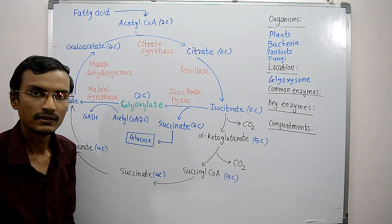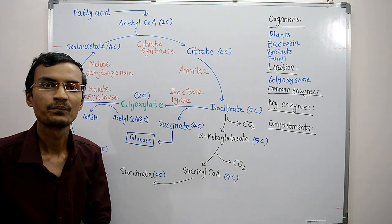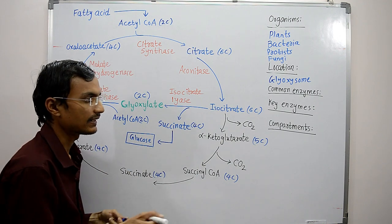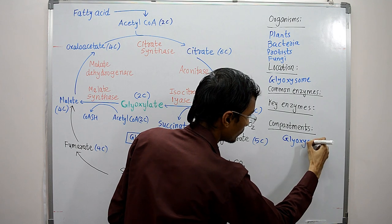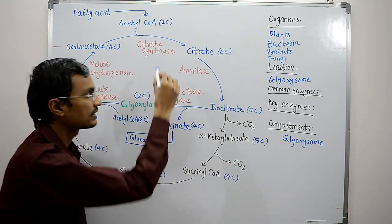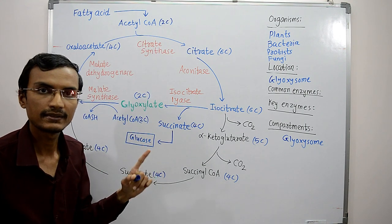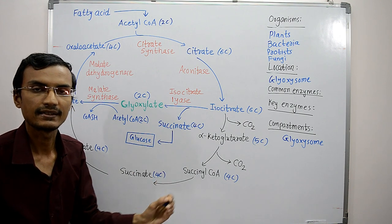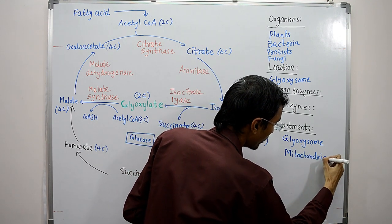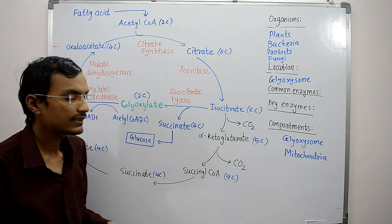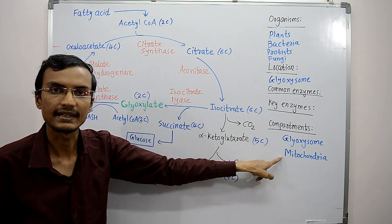For the net conversion, two cycles operate — the glyoxylate cycle and the citric acid cycle. The reactions of the glyoxylate cycle occur inside the glyoxysome, while the reactions of the citric acid cycle occur inside the mitochondrial matrix. So two compartments — the glyoxysome and the mitochondrial matrix — are needed.